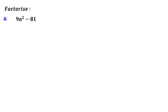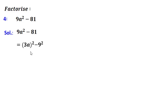Fourth question: 9a squared minus 81. Can you tell me — 9a squared is the square of which term? This is the square of 3a. Square of 3 is 9 and square of a is a squared. So 9a squared can be written as (3a) squared and 81 can be written as 9 squared. Now it is in the form of a squared minus b squared, so its factorization is (3a - 9) into (3a + 9).